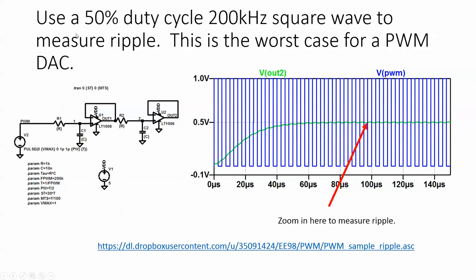In order to measure the worst case ripple we use a 50 percent duty cycle 200 kilohertz square wave to measure it. And so this 50 percent duty cycle should give us one half of whatever our step is and you can see that yeah it's averaged about 0.5. The capacitor voltages start off at zero so it takes a few clock cycles before it's averaging where it should be. This is where you zoom in to measure the spike, the ripple.